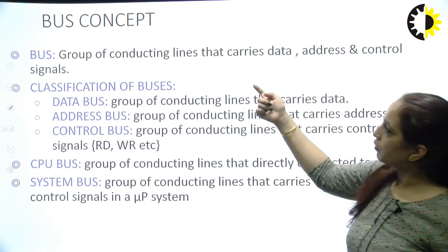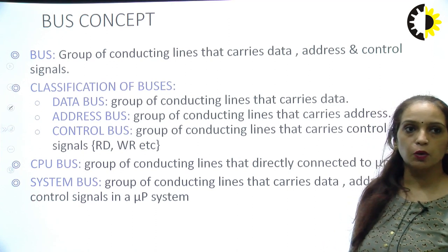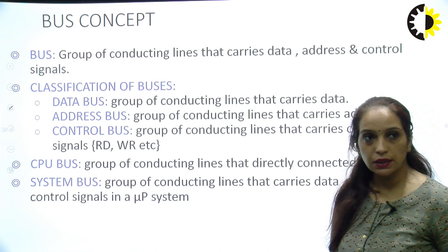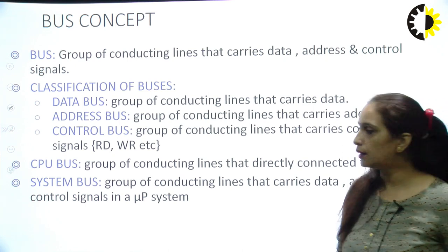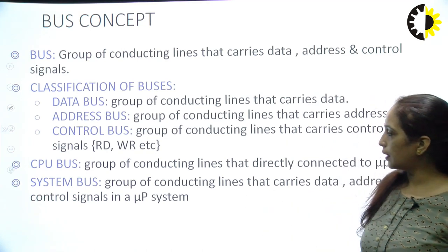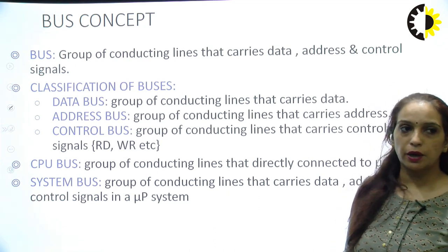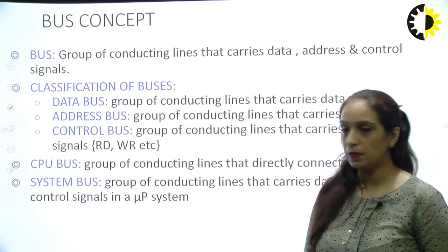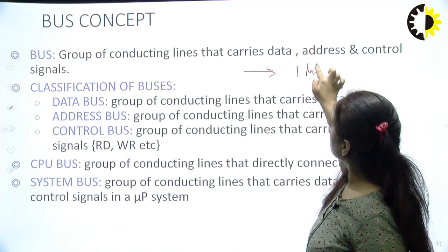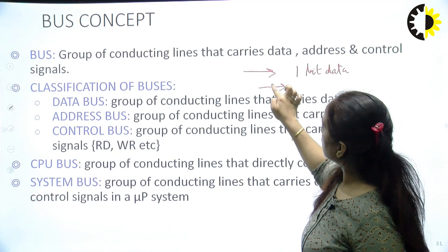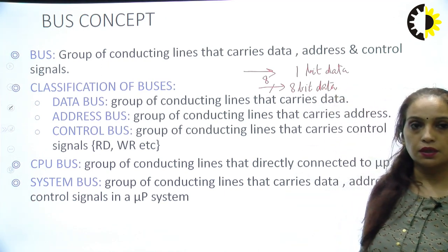A bus is a group of conducting lines that carry data, address, or control signals. There are different types: data bus carries data, address bus carries address, control bus carries control signals like read and write, CPU bus connects directly to the microprocessor, and system bus is the combination of all these carrying data, address, and control signals together.